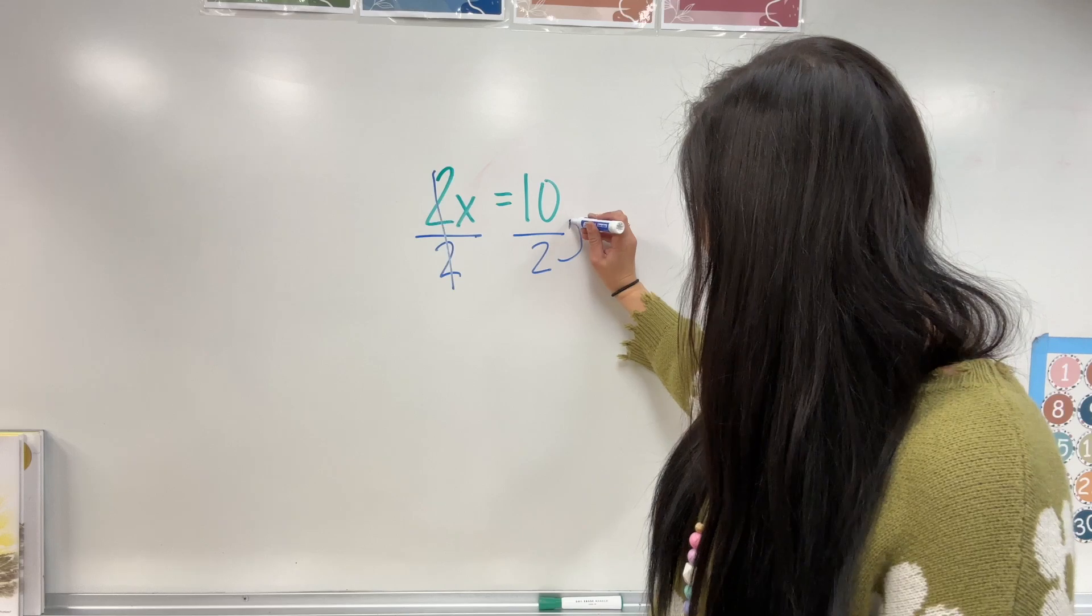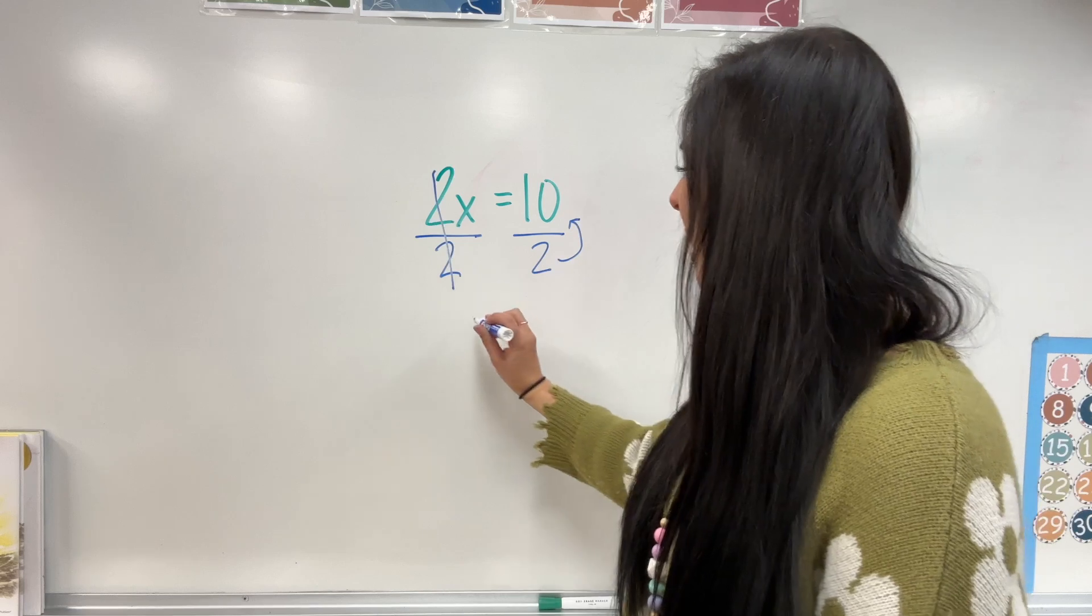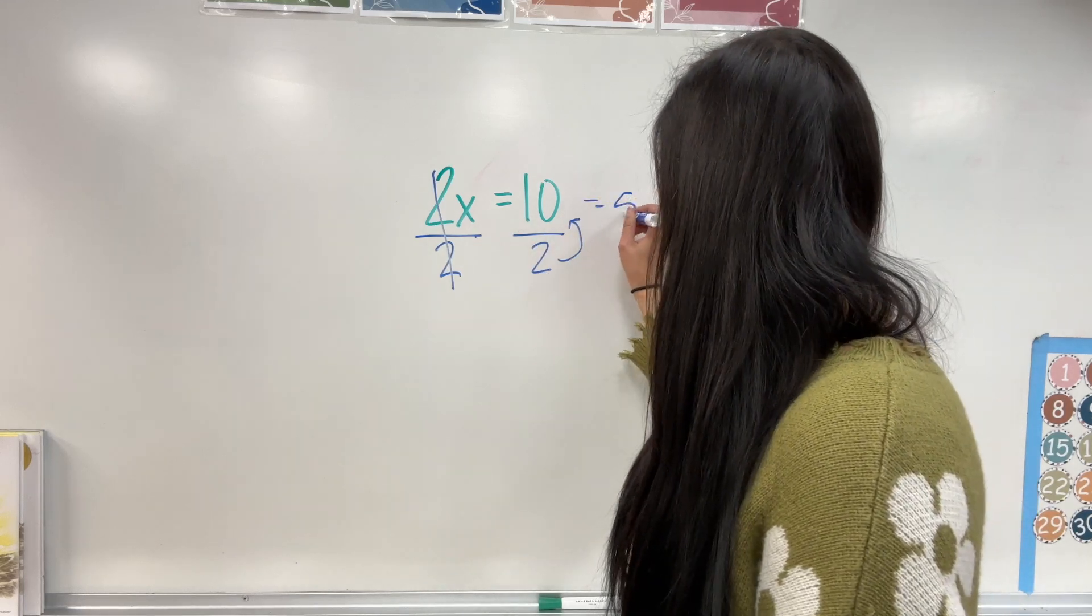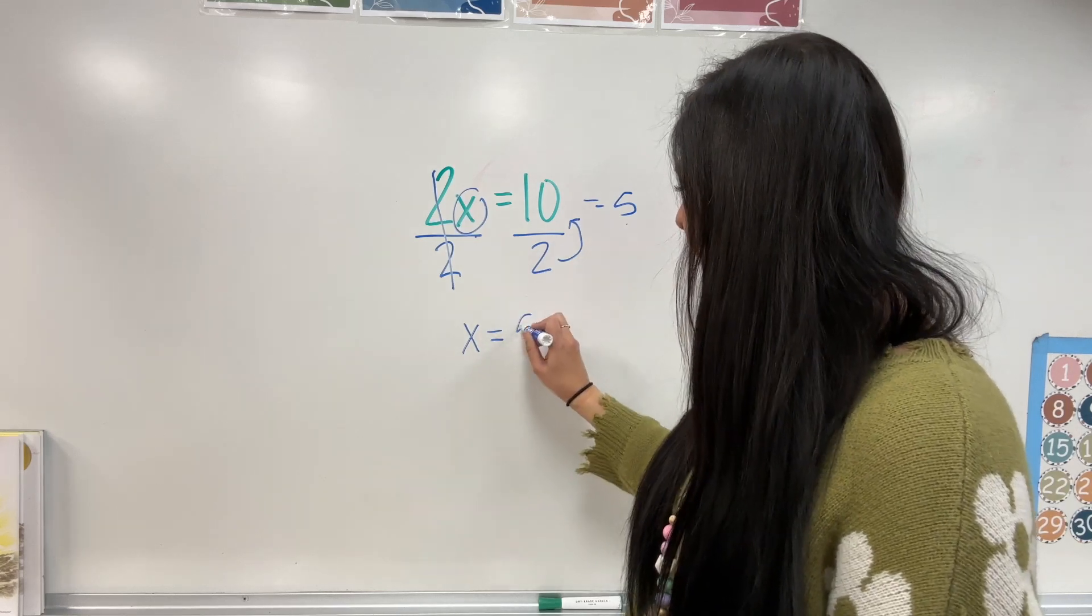How many times does 2 fit inside 10? 2, 4, 6, 8, 10. We have 5, so that means x, I get to get all by itself, equals that 5.